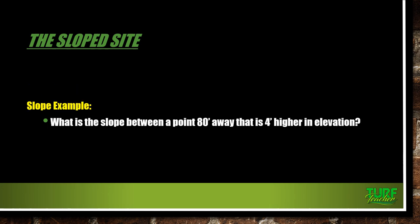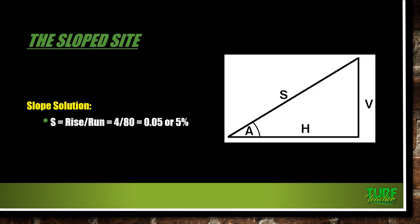Here's a slope example: what is the slope between a point 80 feet away that is four feet higher in elevation? We have a horizontal run of 80 feet and a vertical change of four feet. Slope is rise over run, so four over 80 equals one twentieth, which is 0.05. When we multiply by 100, it gives us a 5% slope — pretty sufficient to get water moving away from any type of structure.